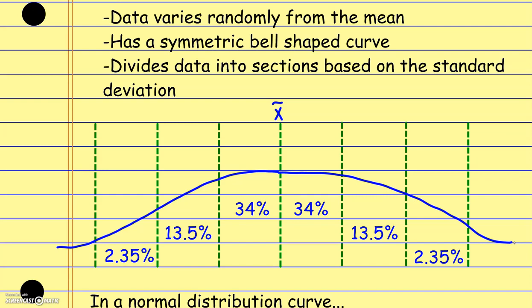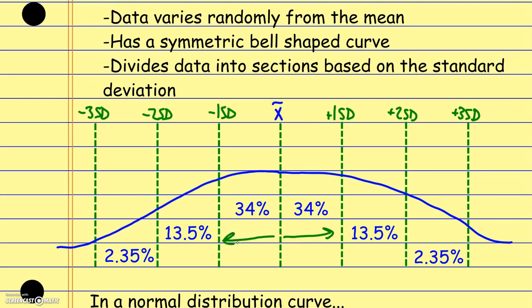...or plus two standard deviations in this direction — and this is what standard deviation measures — plus three standard deviations, or minus one, minus two. If I start to measure my data, at the very center I have the mean. If I go one standard deviation in this direction, that encompasses 34% of my data values, and one standard deviation in the other direction encompasses another 34%. So within one standard deviation of the mean in either direction, 68% of my data values are clustered near the mean.